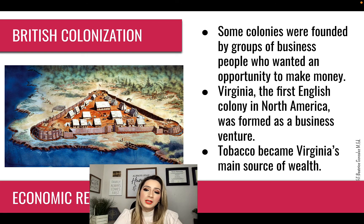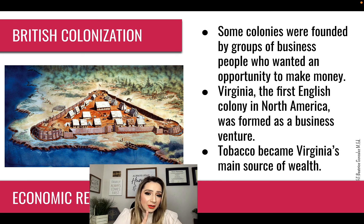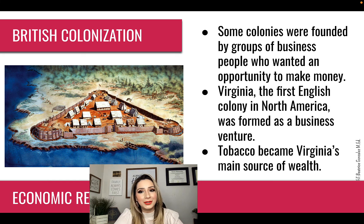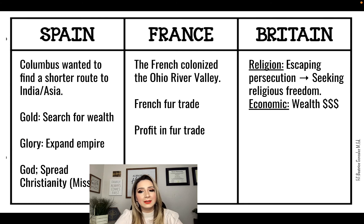Some colonies were founded by groups of business people who wanted an opportunity to make money. Virginia, the first English colony in North America, was formed as a business venture. Tobacco became Virginia's main source of wealth. Even though the Jamestown colonists initially went looking for gold, thinking they were going to be tripping over gold, their gold actually became tobacco, and tobacco plantations are what fueled their colony to success. Go ahead and write 'economic,' 'wealth,' and then your three money signs.